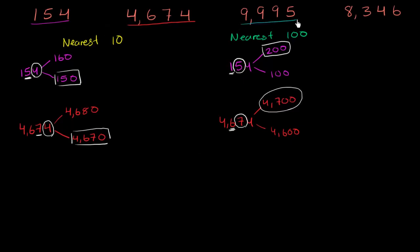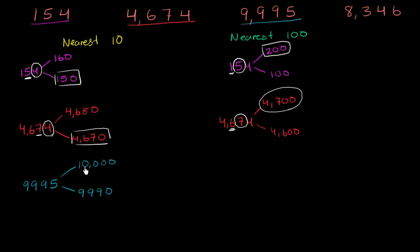Now let's tackle 9,995 — and again, try to pause and do this on your own first. The multiple of 10 below this is 9,990. What's the multiple of 10 above it? Well, if you increase this by 10, you actually get to 10,000. You might say, isn't that a multiple of 100? Actually, 10,000 is a multiple of 1,000 and even 10,000 — yes, it's all of those. But the multiple of 10 right above 9,995 is 10,000. When rounding to the nearest 10, we look at the ones place. The ones place is five or greater, so we round up to 10,000.